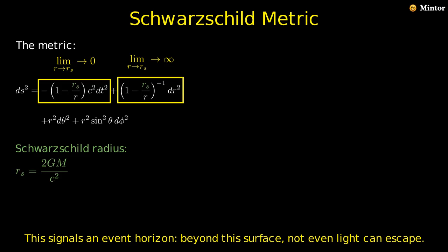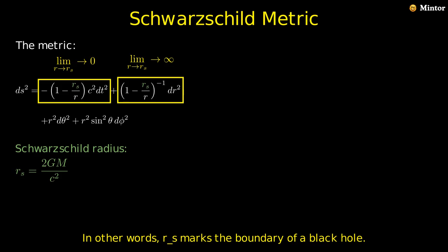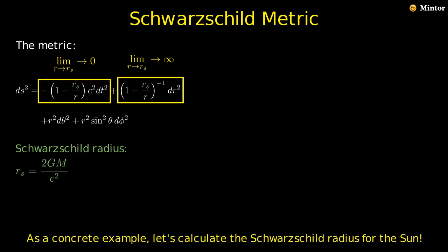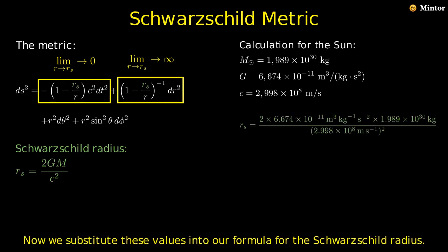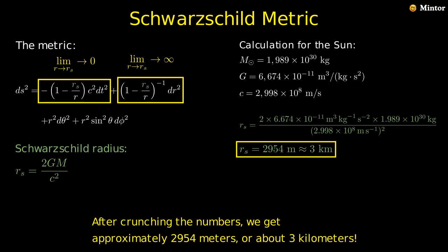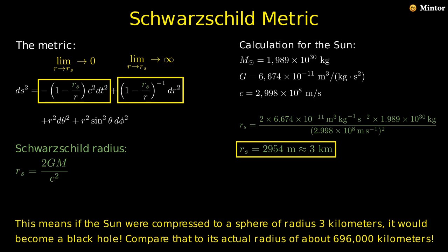Beyond this surface, not even light can escape. In other words, r_s marks the boundary of a black hole. As a concrete example, let's calculate the Schwarzschild radius for the sun. We know the sun's mass is about 1.989 times 10 to the 30 kilograms. Let's plug in the values. Now we substitute these values into our formula for the Schwarzschild radius. After crunching the numbers, we get approximately 2,954 meters, or about 3 kilometers. This means if the sun were compressed to a sphere of radius 3 kilometers, it would become a black hole. Compare that to its actual radius of about 696,000 kilometers.